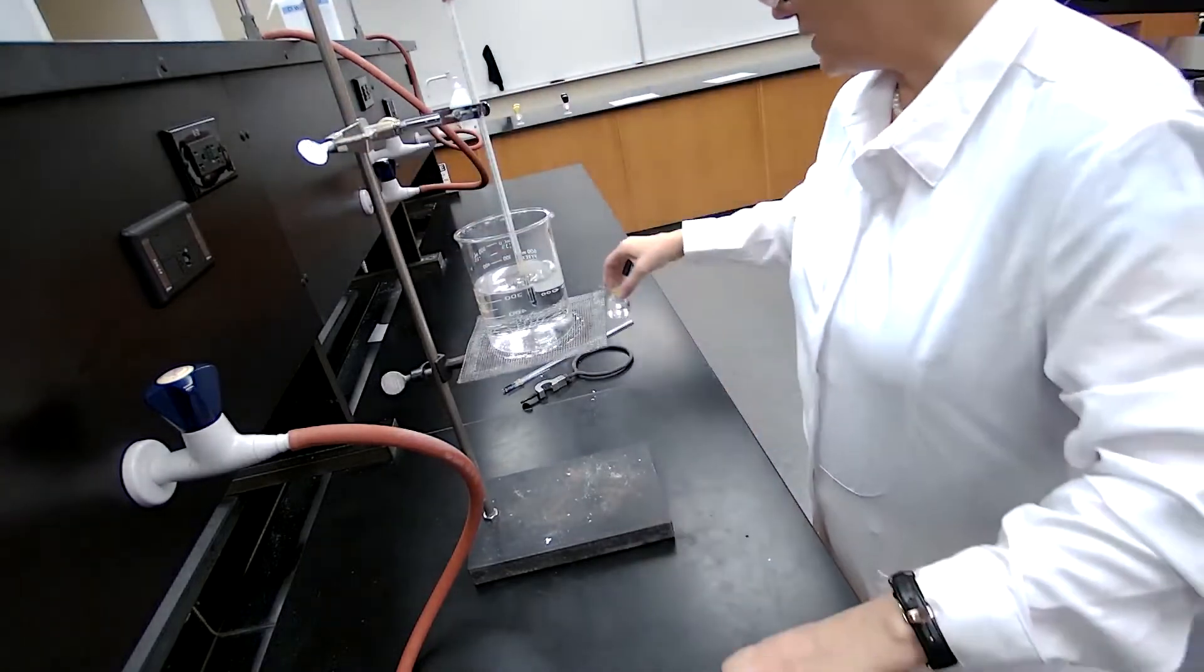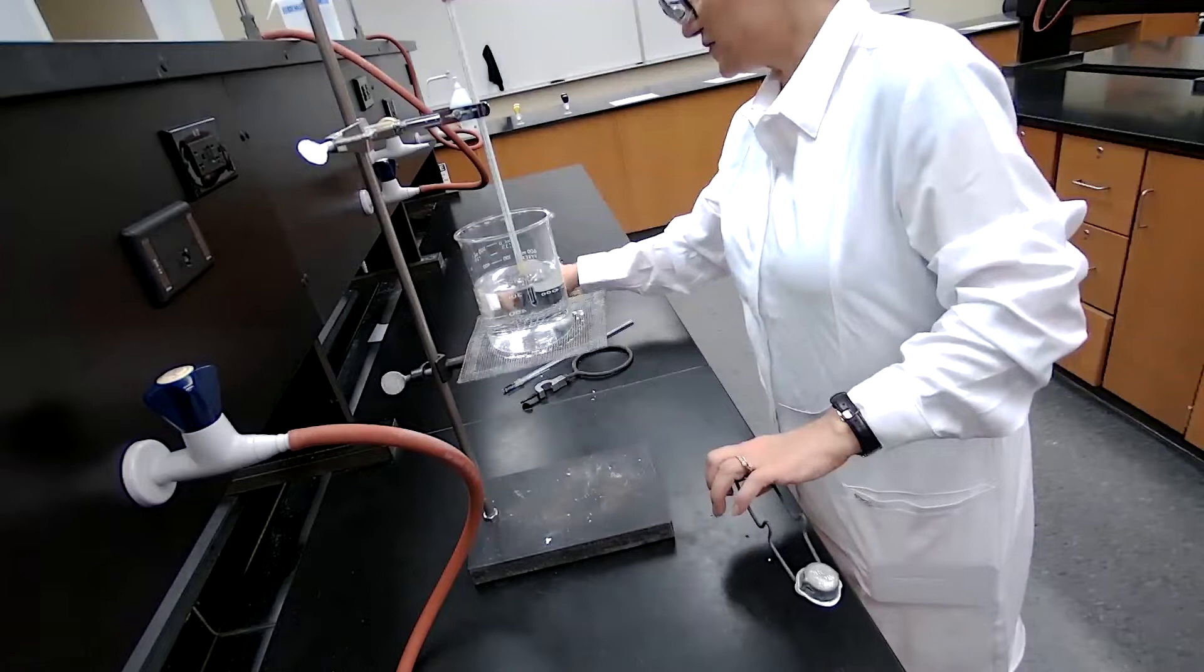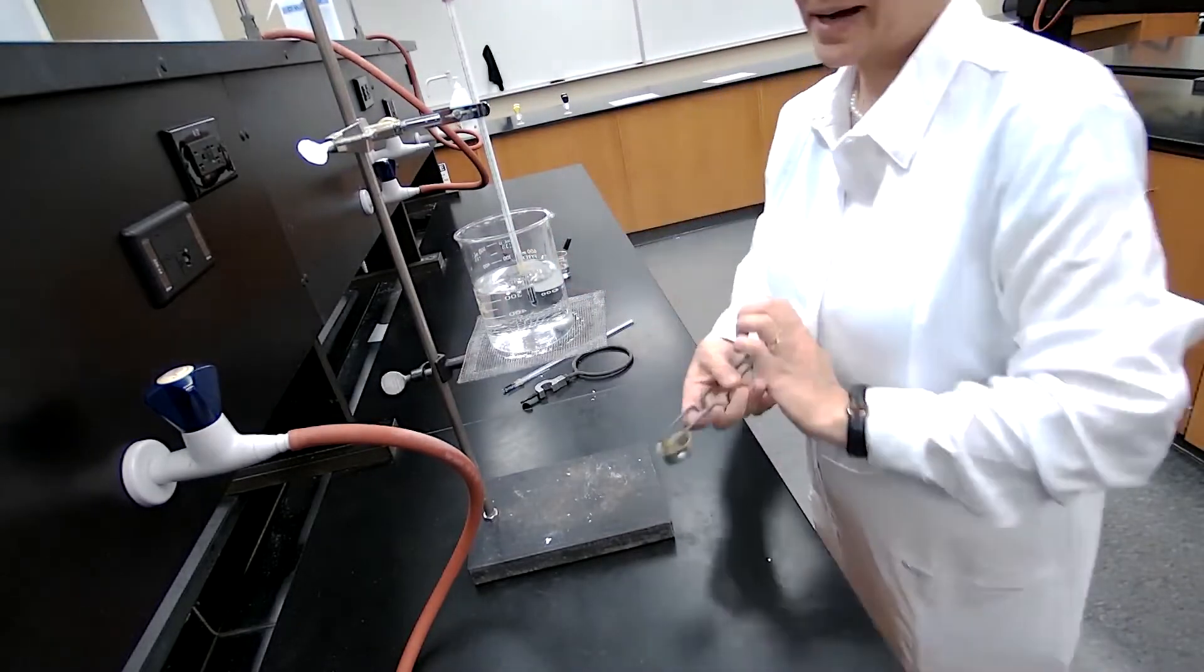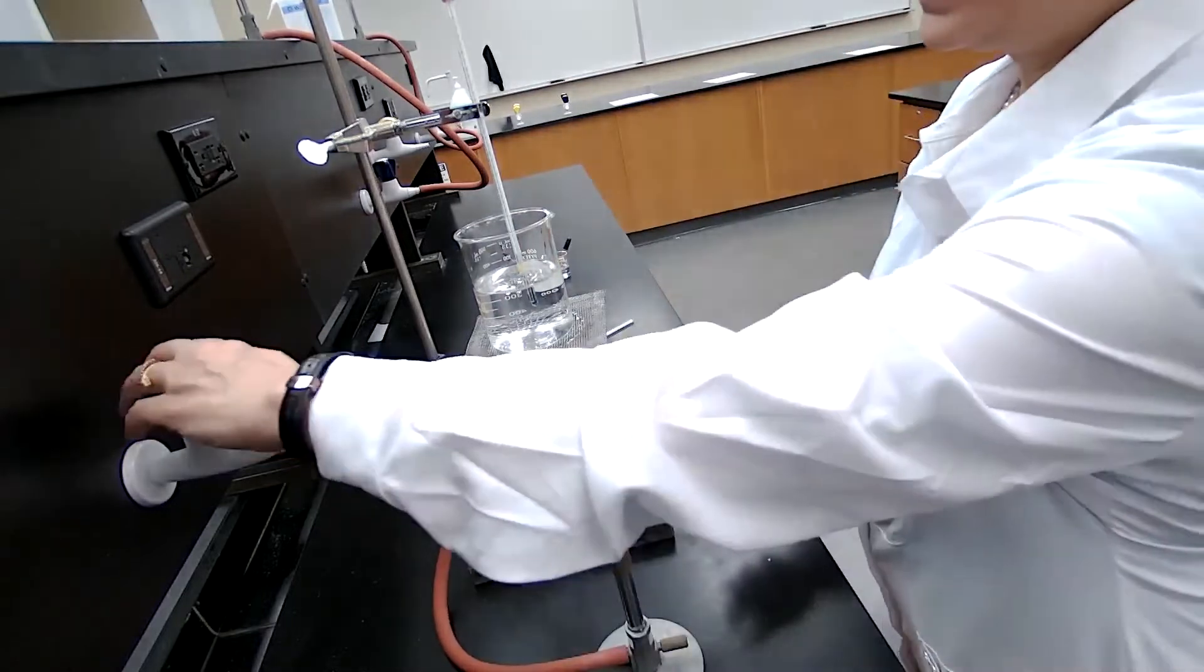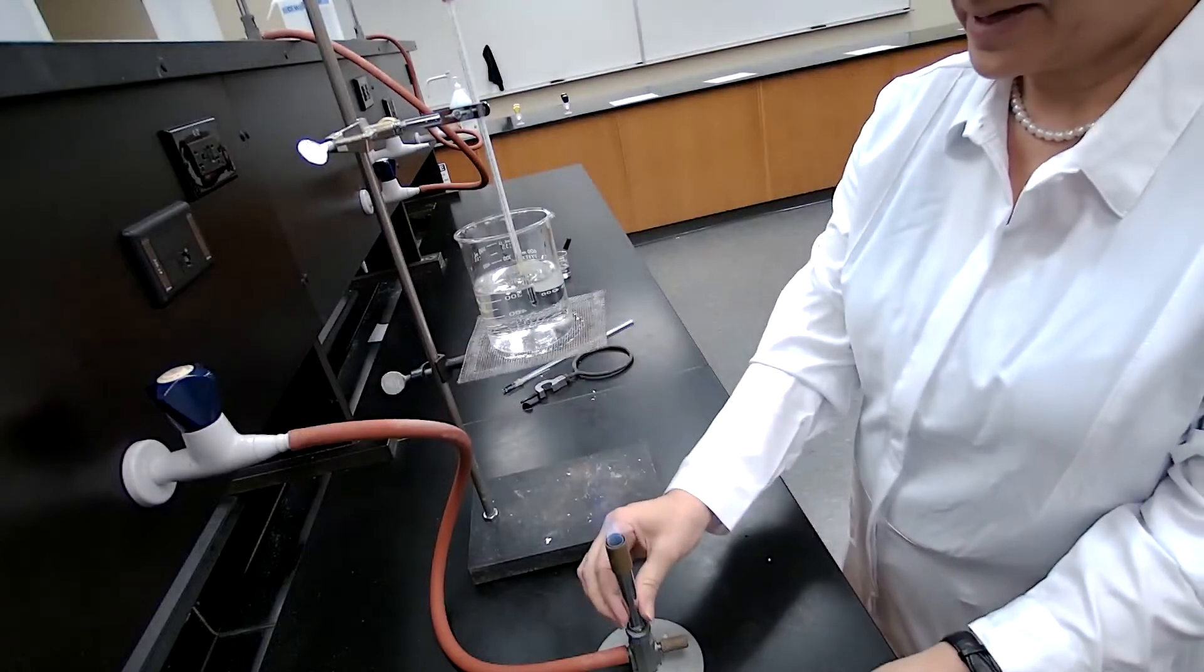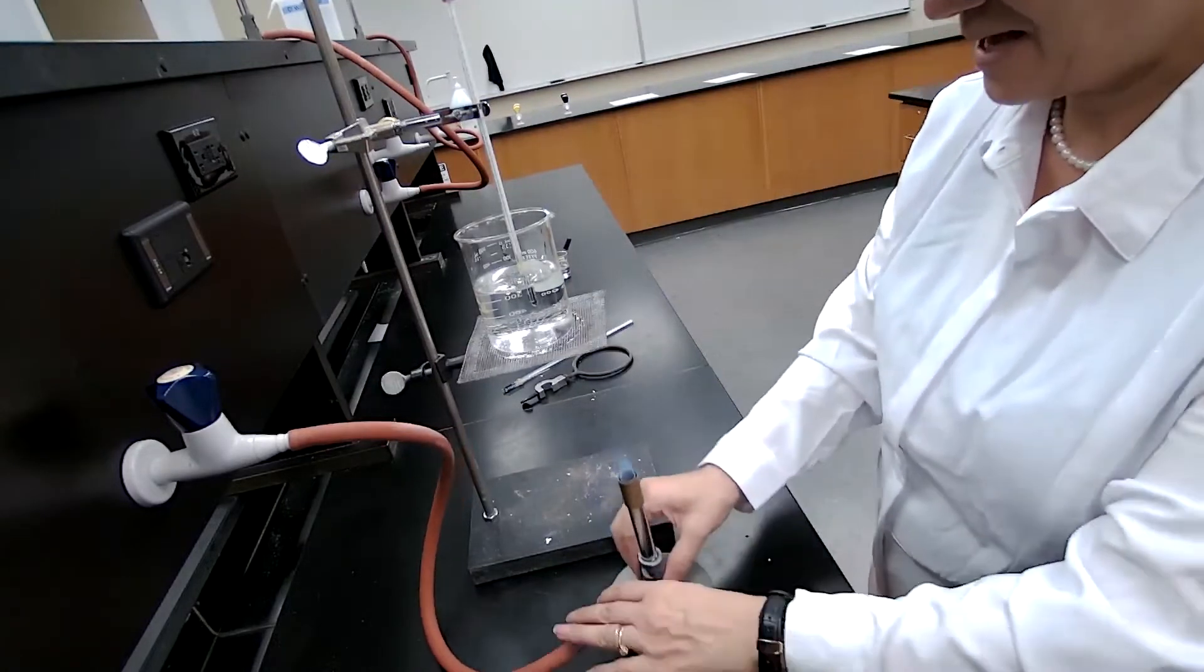I'm going to turn on the Bunsen burner. Since ethanol is flammable, I have to move it away. And then I will turn on the Bunsen burner, adjust the flame, making sure that it's not yellow color and it doesn't make sound.